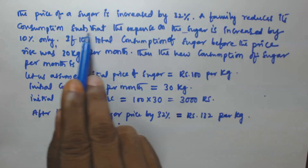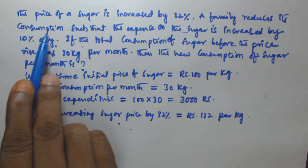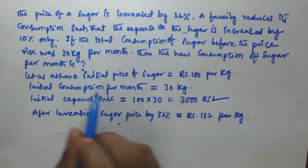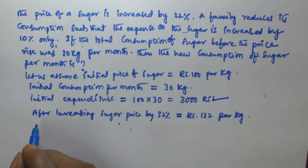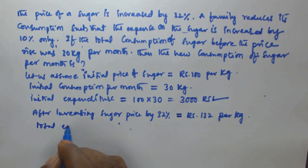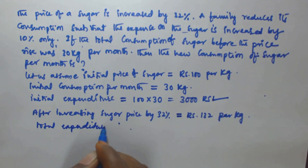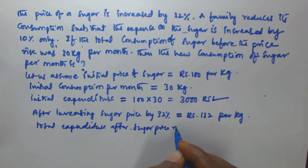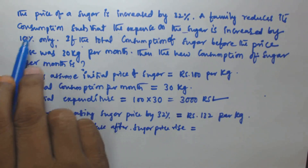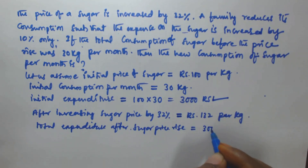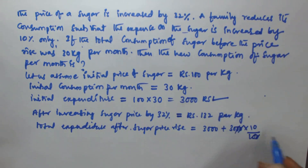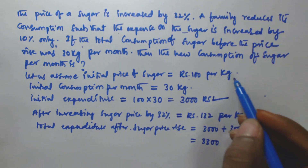It is also given that the expense on the sugar is increased by 10 percentage only. So the total expenditure after the sugar price rise is equal to 10 percentage increase on 3000 — that is 3000 plus 10 percentage of 3000, which is 300 more — so that is going to be 3300 rupees.